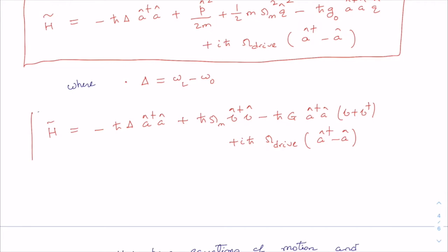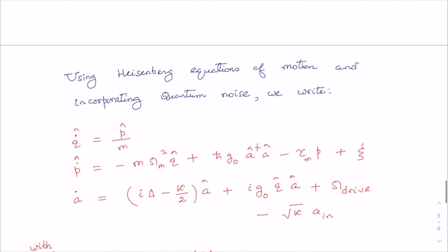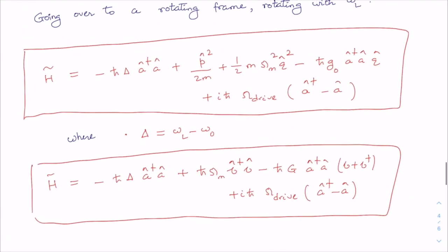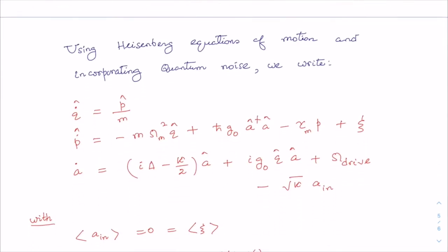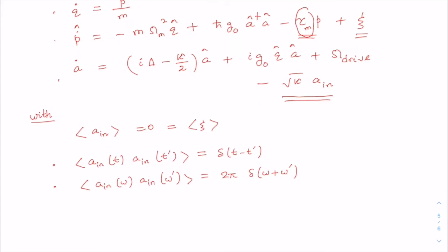In the rotating frame of reference, we rewrite our Hamiltonian with the detuning parameter Δ. Using the Heisenberg equation of motion and incorporating quantum noise, we obtain equations of motion for the various operators: position, momentum, and the optical mode. We have incorporated the quantum Langevin noise, where γ_m is the mechanical damping rate and there is also noise entering the optical cavity with zero mean.